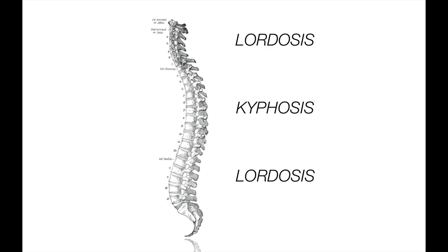A fully assembled vertebral column has a few curves in its shape. There is a concave shape to the cervical and lumbar regions of the spine, known as a lordosis, and there is a convex shape to the thoracic region, known as a kyphosis. These natural curves can become exaggerated or lost in certain pathologies, so it's useful to look for them when you examine the patient.